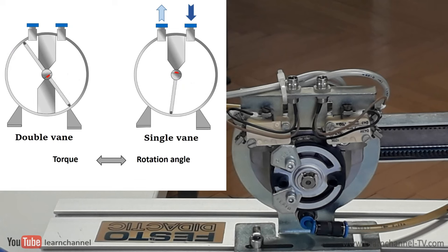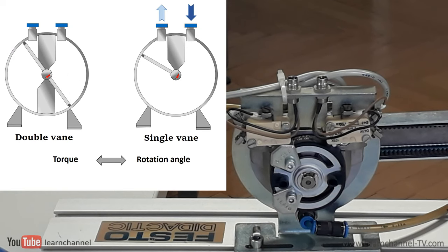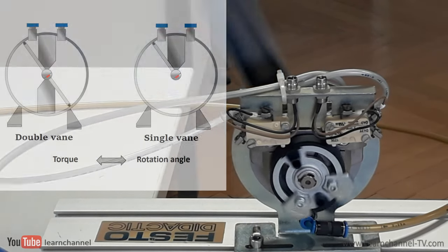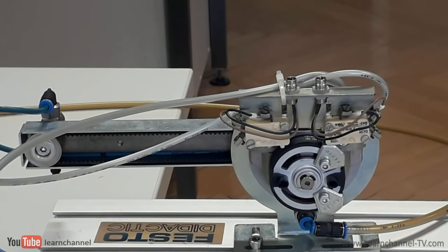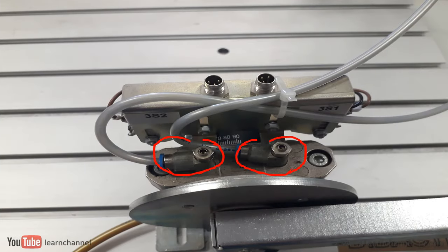The double-vane type offers a less rotational range, which is limited by half but produces twice the torque. This type of rotary cylinder uses external methods to limit the rotation or to cushion the load. The end position of our cylinder here is detected mechanically.